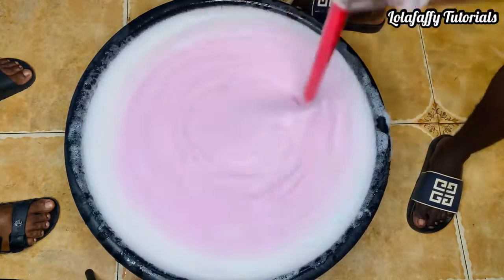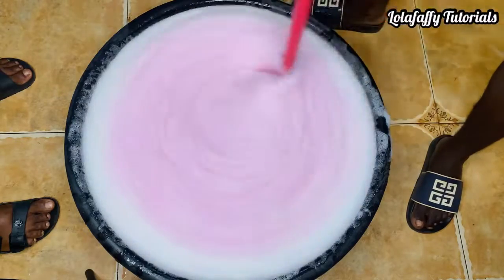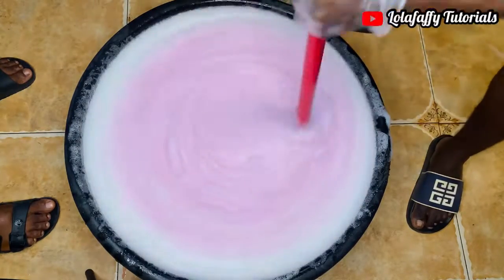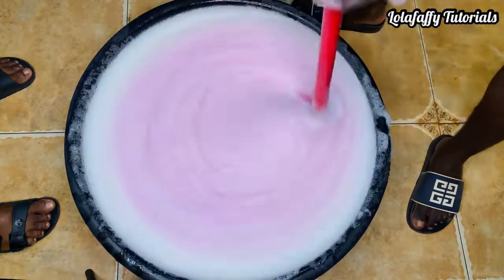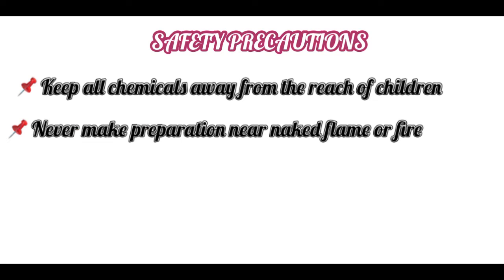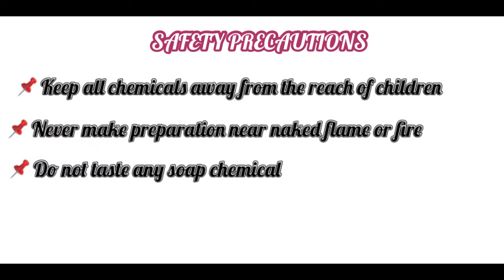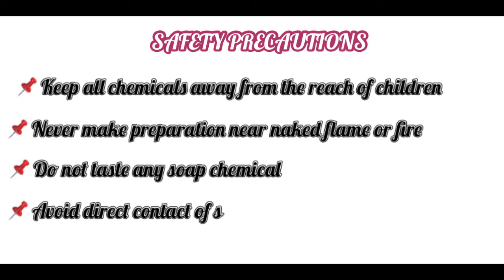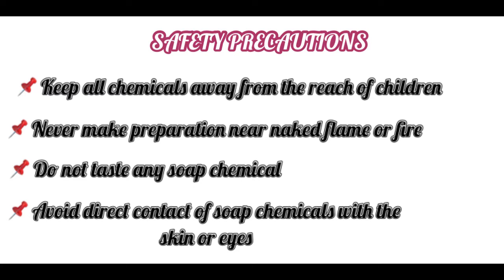But before we dive into the production, let's go over the 5 precautions you must take when producing liquid soap. Keep all chemicals away from the reach of children. Never make preparations near naked flame or fire. Do not taste any soap chemical. Avoid direct contact of soap chemicals with the skin or eyes.